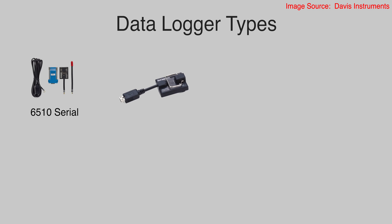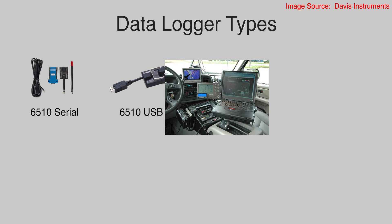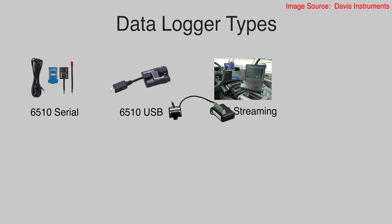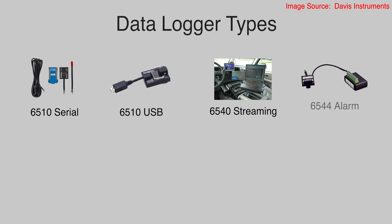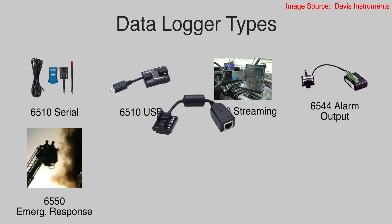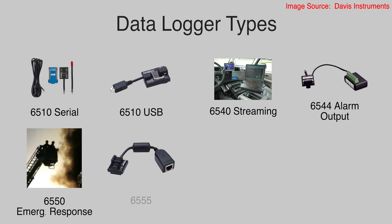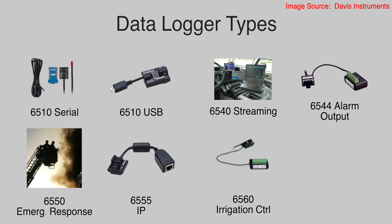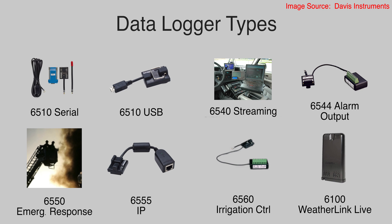The data loggers we'll be discussing are the 6510 — both the serial and USB variant — the 6540 streaming logger for APRS, the 6544 for alarm output, the 6550 for emergency response teams, the 6555 IP data logger, and the 6560 for irrigation control. We're also going to cover the 6100. While functionally it is a data logger, it doesn't actually connect to your weather console, but rather directly to your ISS, in much the same way that the console connects to the ISS.